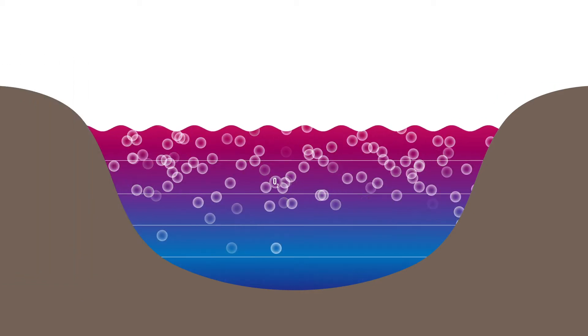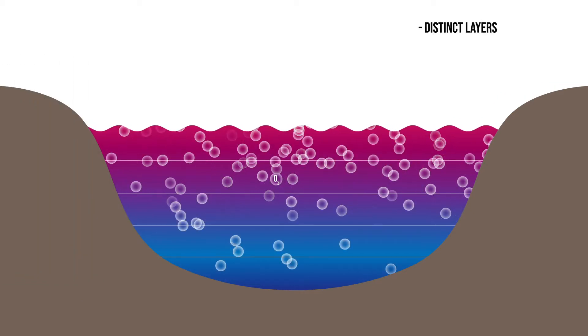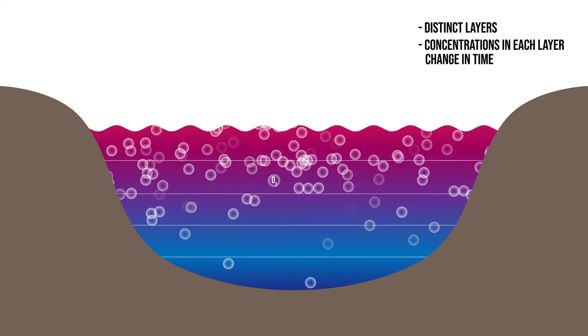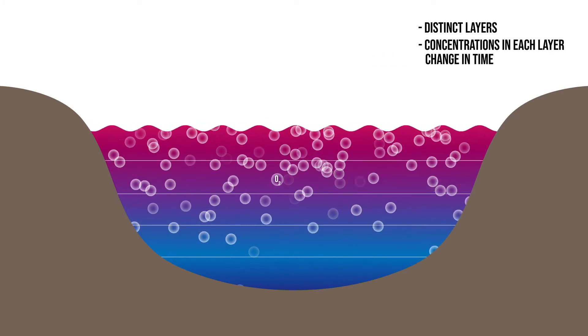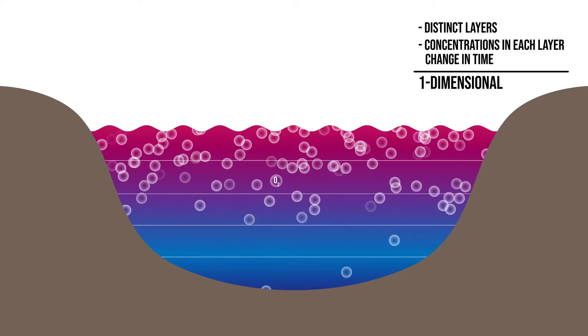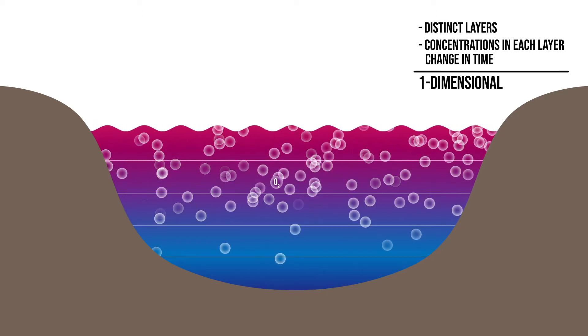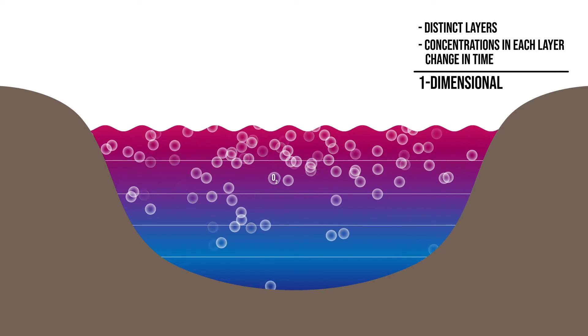In this case, you may consider that you have distinct layers through the depths of the lake, and the concentrations of water quality variables in each layer may change in time. This makes it a one-dimensional model, since we have concentrations changing both over time and also in depth.